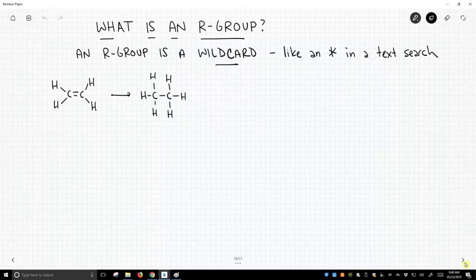So an R-group is really a wildcard in a molecule. It's much like using an asterisk in a text search.